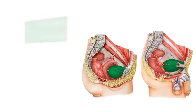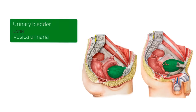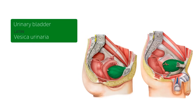We're going to start off by looking at some sagittal-ish sections of the infraperitoneal area with our female model on the left and our male model on the right. Our bladder is highlighted in both images in green.